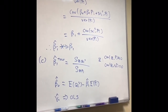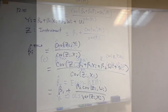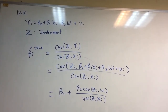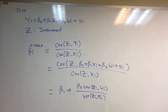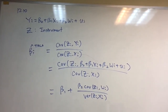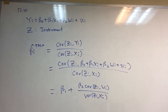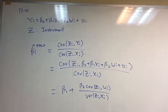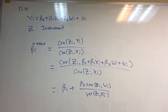This is the solution of 12.8. Now for question 12.10, you are asked whether beta_1_hat is consistent or not. Again, applying the formula, beta_1_hat equals the covariance of the instrument and y divided by the covariance of the instrument and x.